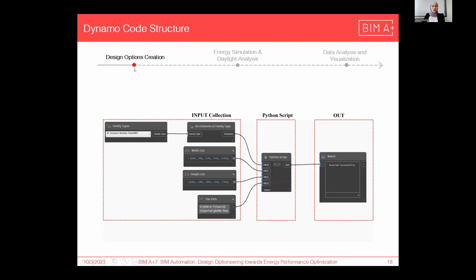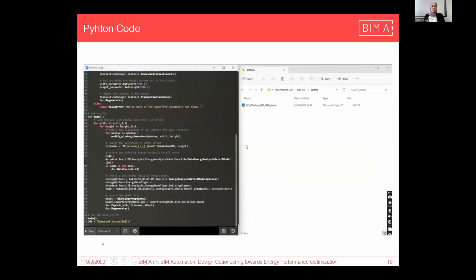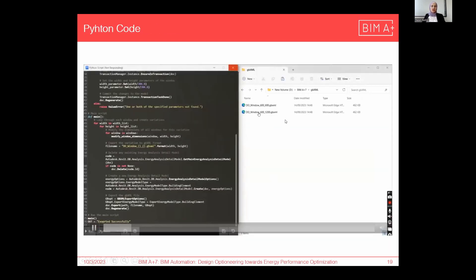Now we will go through the automation process steps. The first step is design options creation. We have this Dynamo code structure — as input, we have the elements to change (in our case, windows), then the width list and height list, and we export the different variations. Here is the Python script; by reading the code, the different variations and options start generating one by one.